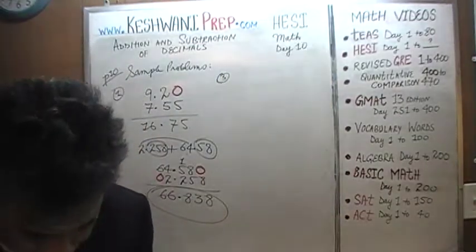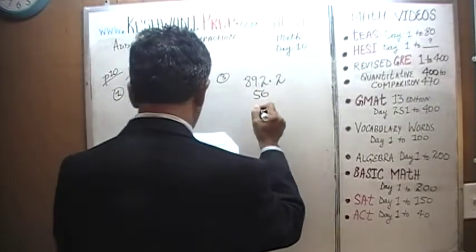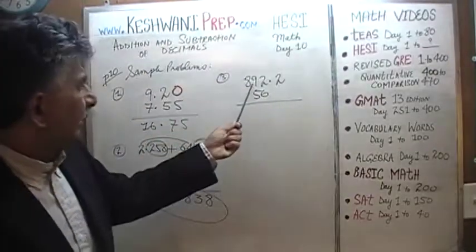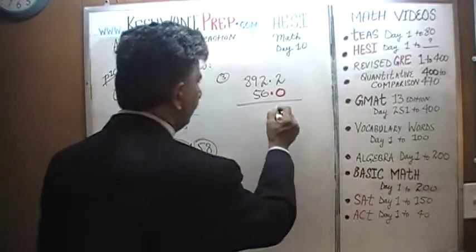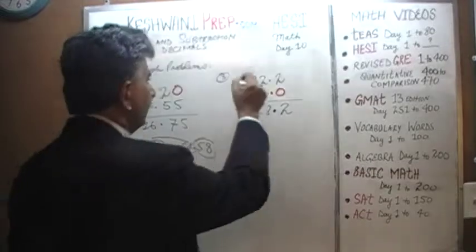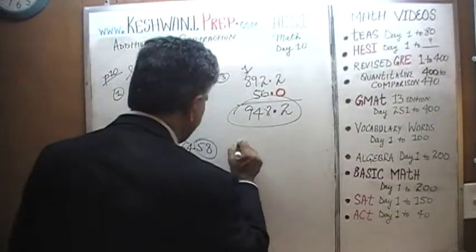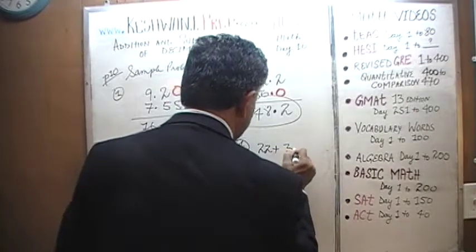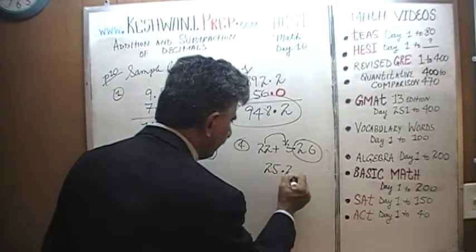Number 3: 892.2 plus 56. There is really nothing to do here. We simply add 892 and 56 because the second number has no decimal part — it is just 0. So the 0.2 is just going to come down unchanged. 2 plus 6 is 8, bring down the decimal, 9 plus 5 is 14, write 4 carry 1, and that gives us 948.2. Number 4: 22 plus 22 plus 3.26. Well, 22 plus 3.26 is very simple: 22 plus 3 is 25, and then you have 0.26. That's all — the answer is 25.26.